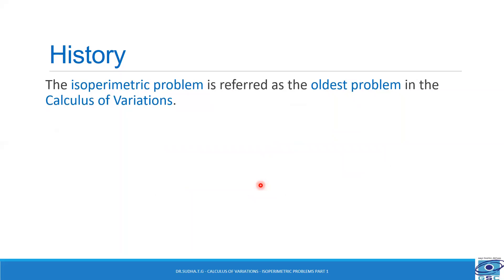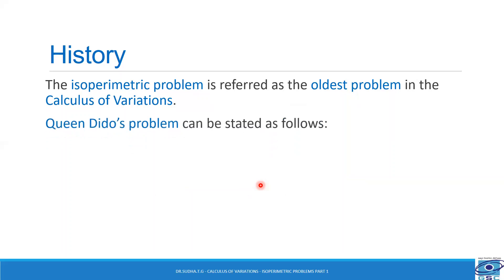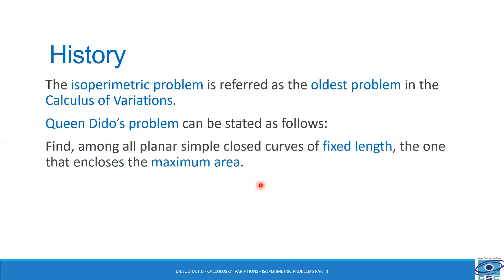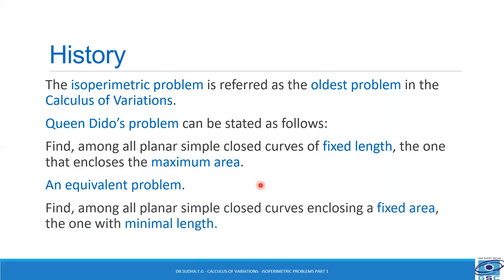The isoperimetric problem is referred to as the oldest problem in the calculus of variations. Queen Dido's problem can be stated as follows: find among all planar simple curves of fixed length the one that encloses the maximum area. Or equivalently, find among all planar simple closed curves enclosing a fixed area the one with minimal length. As for the mathematics, the Greeks pretty much solved it by their standard.